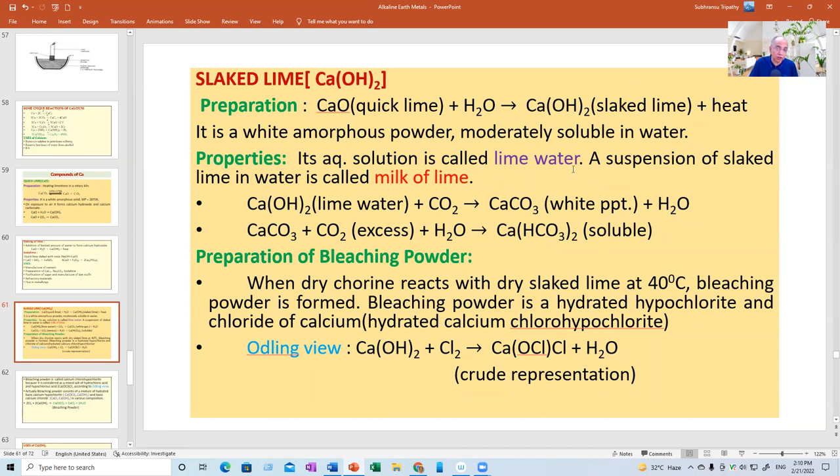Now, slaked lime is a white amorphous powder, moderately soluble in water. I told you it is in the middle and its aqueous solution is called lime water. But if you load it with more, it becomes a suspension. It is called milk of lime. So, there is a difference between lime water, which is a clear solution, and this is milk of lime, suspension. And the solid substance is slaked lime. Carbon dioxide when passed through lime water first produces a white precipitate, which with subsequent excess carbon dioxide produces calcium bicarbonate, which is soluble.